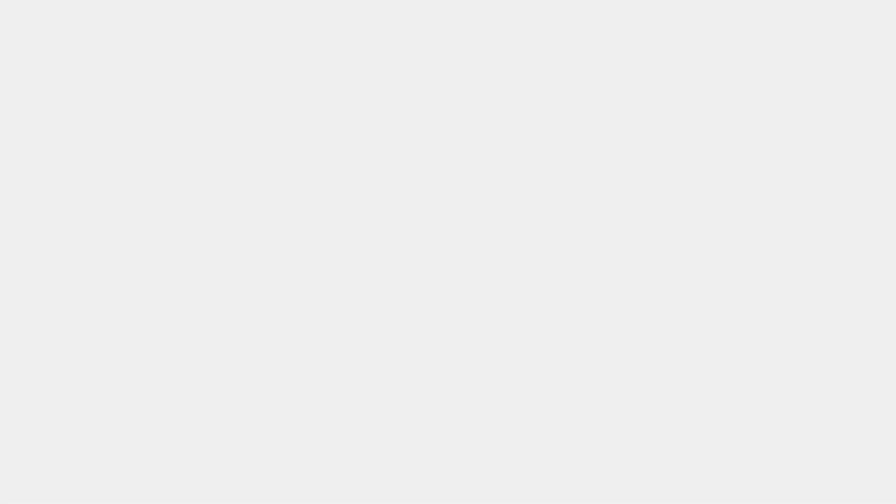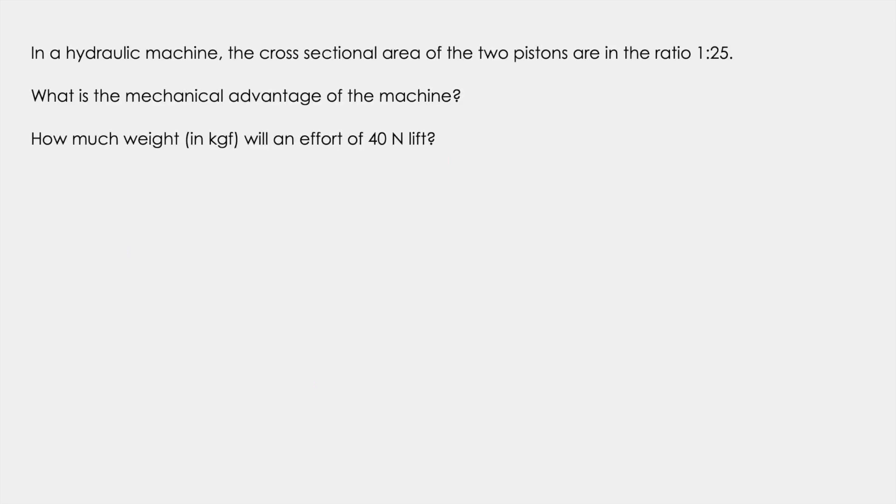Now let's look at another problem. In a hydraulic machine the cross sectional area of the two pistons is in the ratio of 1 is to 25. What is the mechanical advantage of the machine? And how much weight in kgf will an effort of 40 Newton lift?